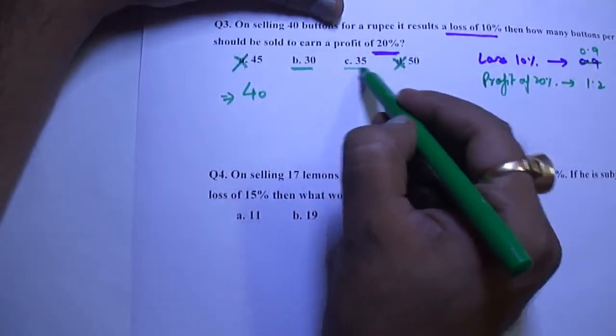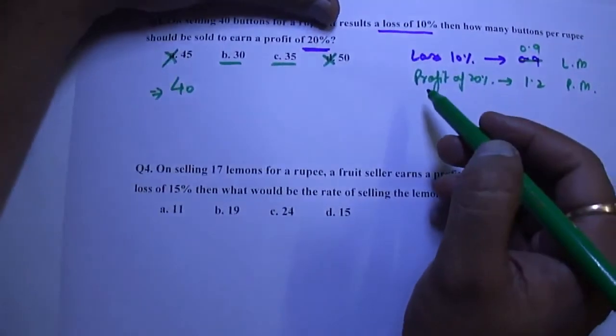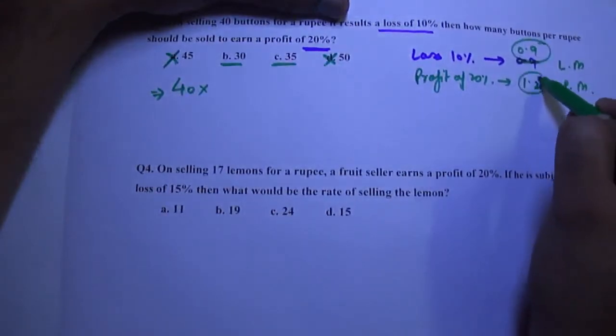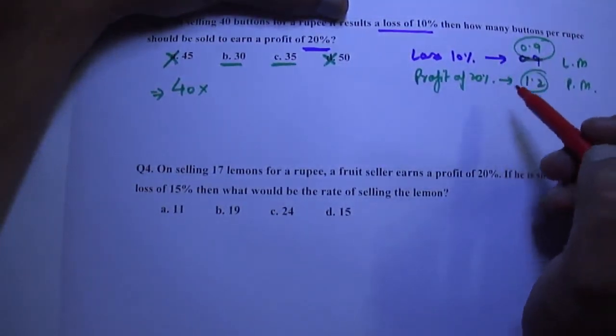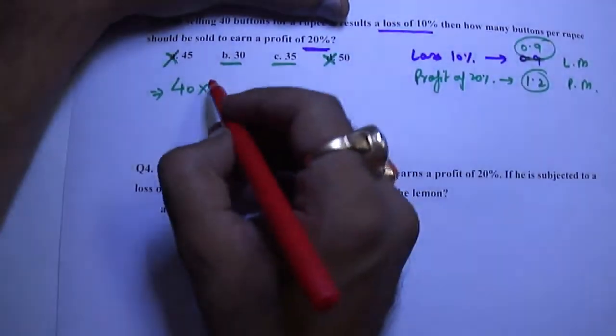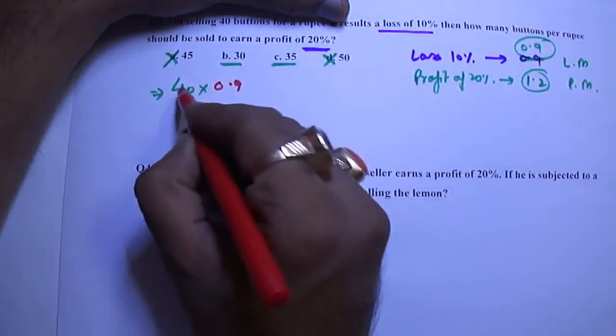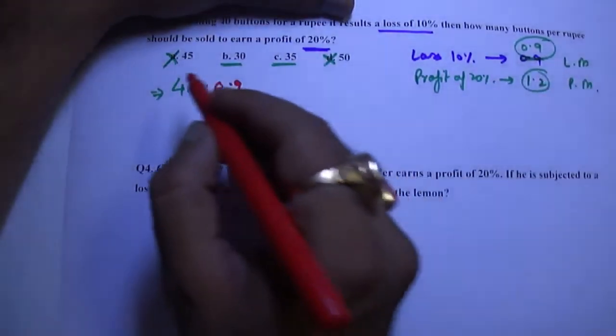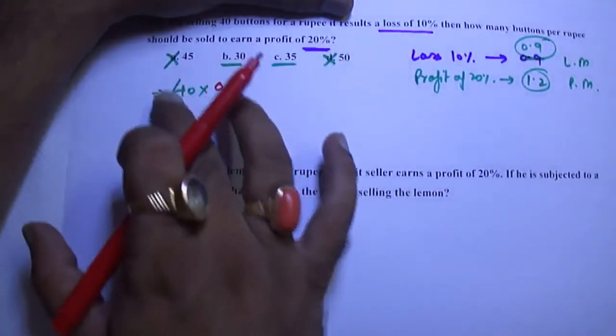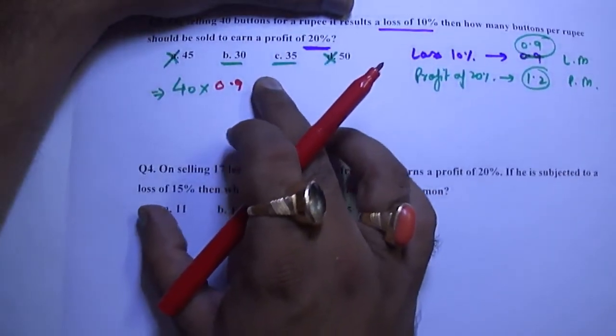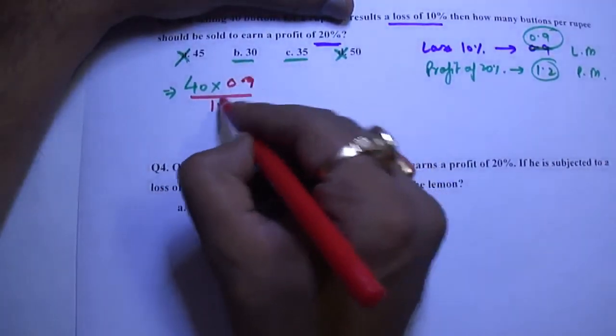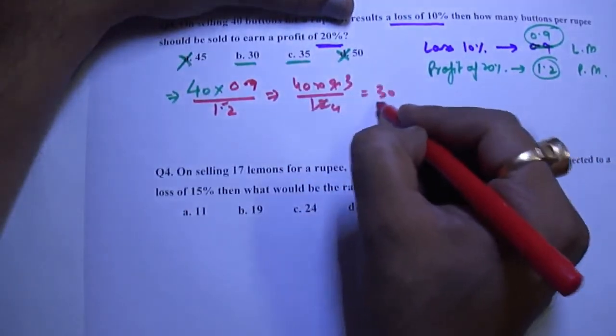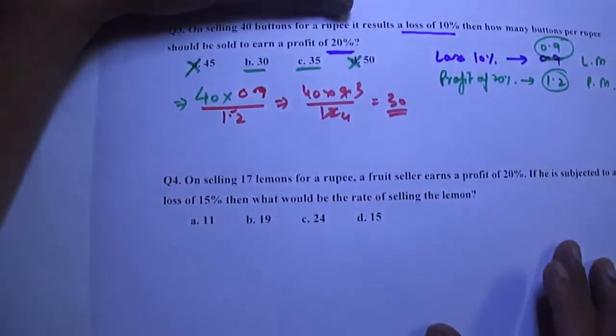A very simple logic for this type of question is we want to decrease this 40. We have two values 0.9 and 1.2. We can either multiply or divide. We want to decrease, so if we multiply by 0.9, the value will decrease. And to decrease, we divide by 1.2. If we multiply by 1.2, the value will increase. We have to decrease, so we will divide by 1.2. Simplifying, 30 buttons. To get a profit of 20%, we should sell 30 buttons.